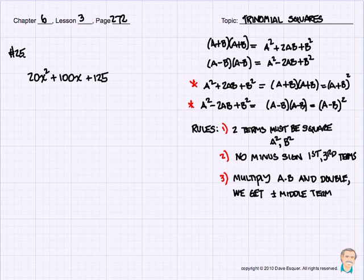Good morning. Chapter 6, Lesson 3 is on page 272. We're going to be doing trinomial squares today — a little bit more complicated than a difference of two squares, but basically the same kind of idea.